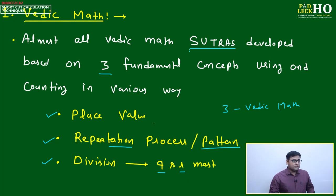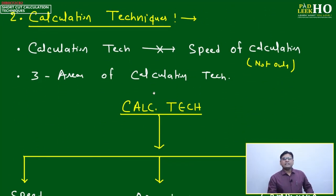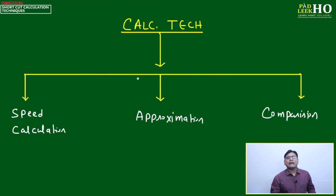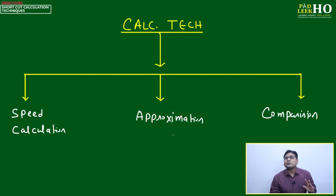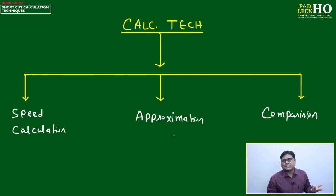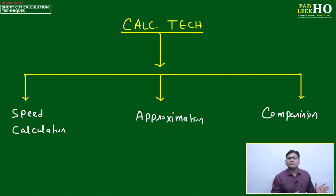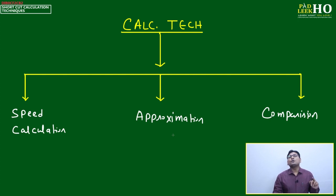Calculation technique is not just about the speed of calculation — there are three areas of calculation required for a better technique to save time during mock tests, sectional tests, practice, and the actual CAT. If you're able to save time, your second goal is that your accuracy rate should be 90-plus percent, meaning your percentage of errors should not cross seven to ten percent.